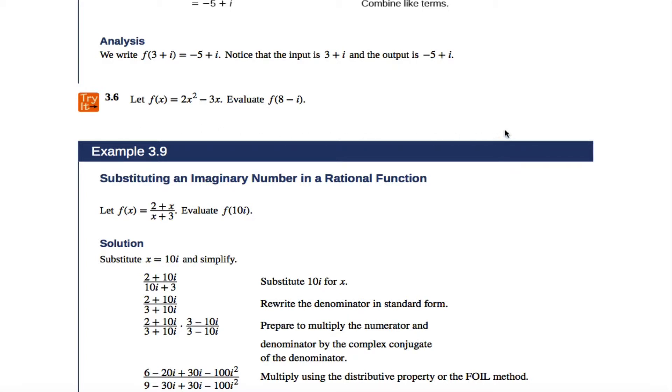All right, here's try it 3.6. These are kind of fun, I guess. You have a function, and this function notation tells me that when I put x into the machine, what comes out is 2x² - 3x, and we put all sorts of crazy stuff into functions.